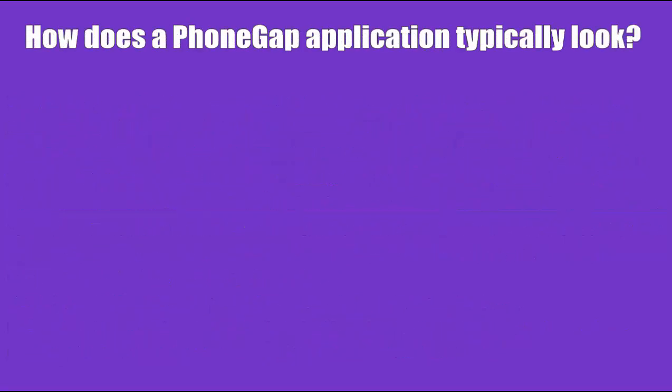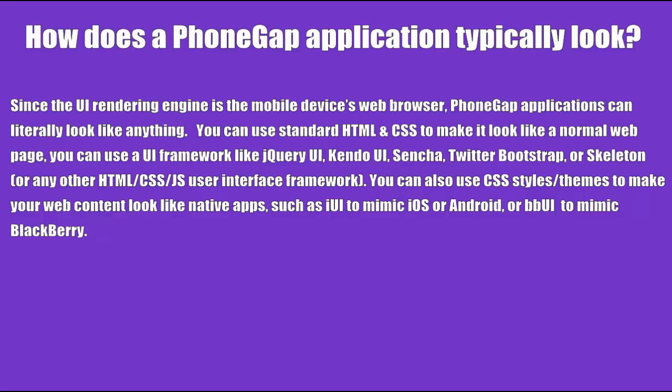How does a FongApe application typically look? Since the UI rendering engine is the mobile device's web browser, FongApe applications can literally look like anything. You can use standard HTML and CSS to make it look like a normal web page, or you can use a UI framework like jQuery UI, Kendo UI, Sencha, Twitter Bootstrap, or Skeleton, or any other HTML/CSS/JavaScript user interface framework. You can also use CSS style themes to make your web content look like native apps, such as a UI to mimic iOS or Android, or BB UI to mimic BlackBerry.